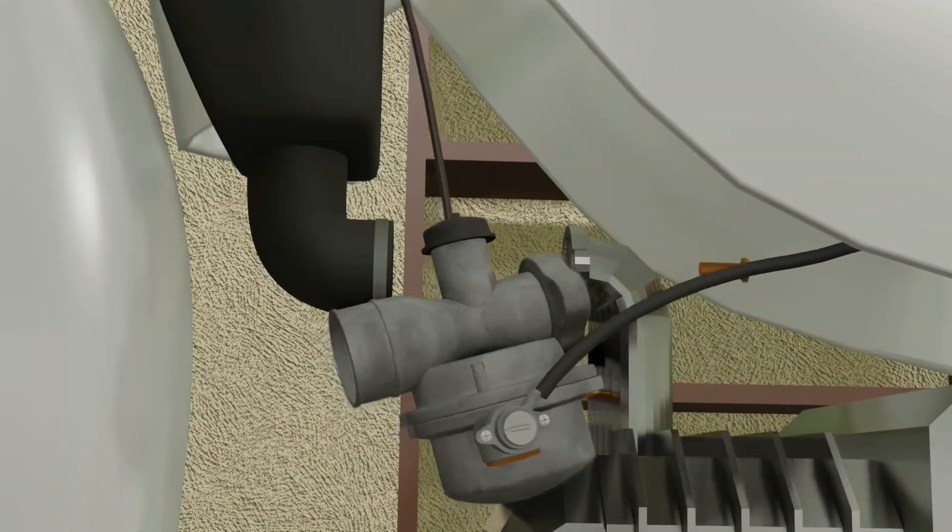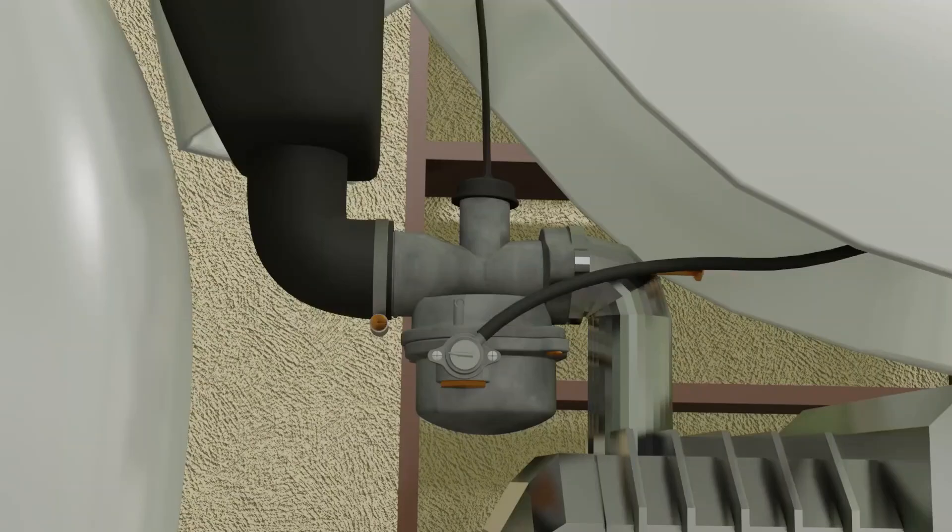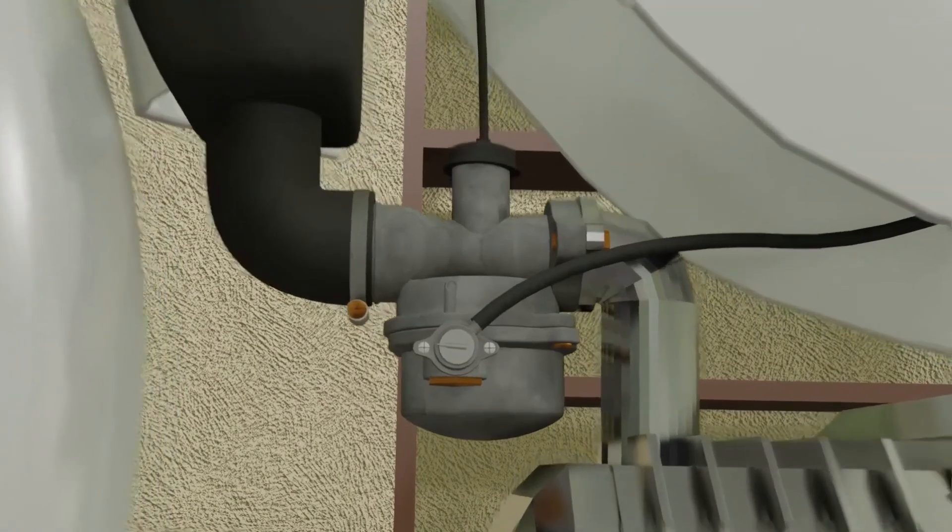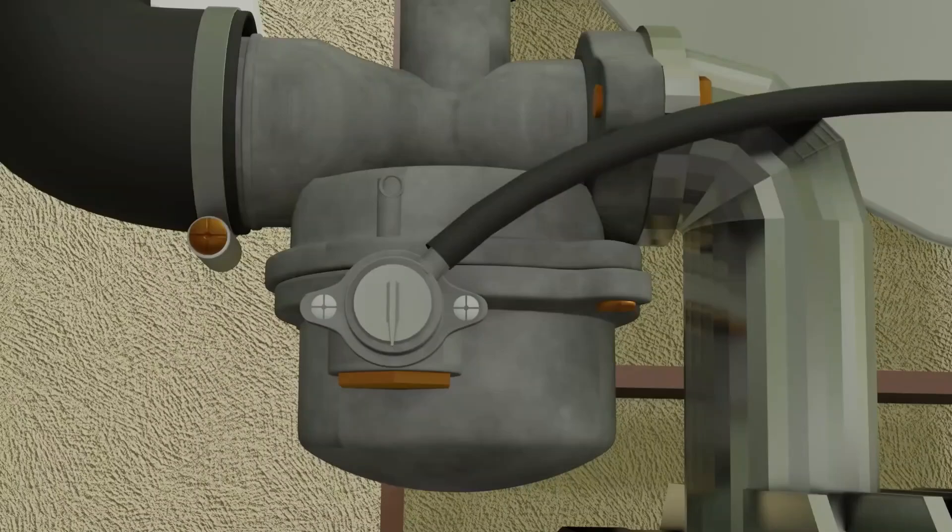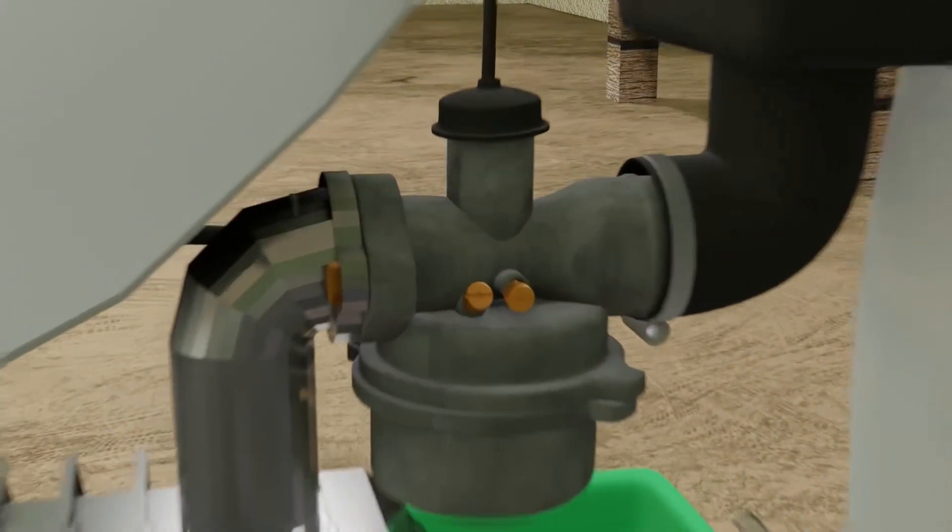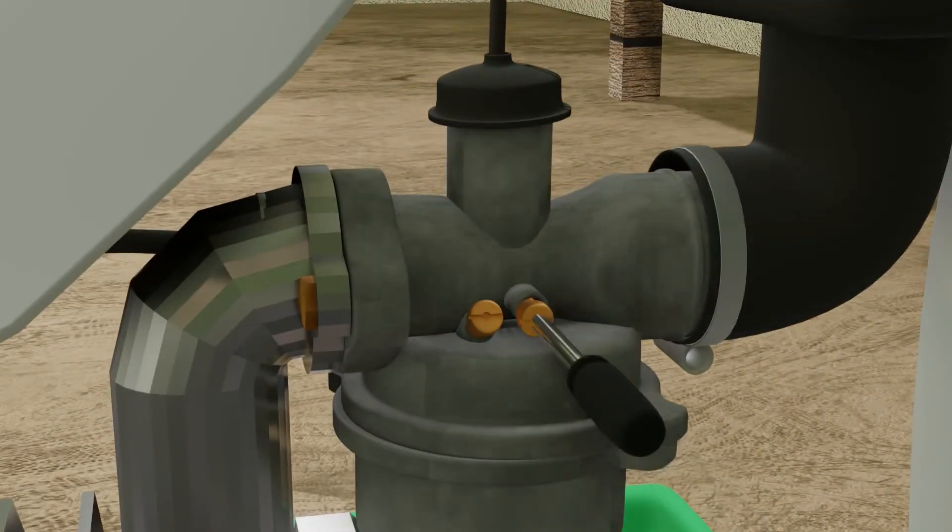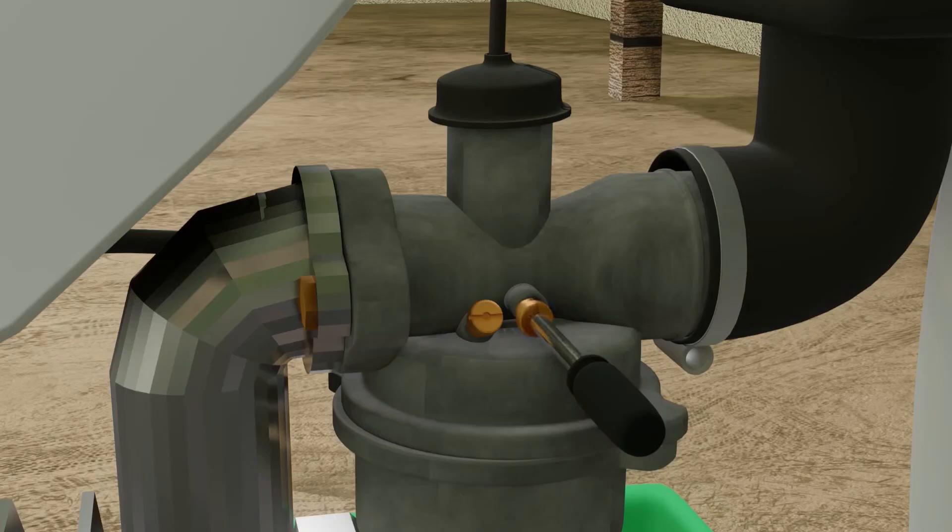Then install the carburetor to the manifold. After all is done, open the gas tab. The last step, the engine RPM setting. The way to do it is to turn on the engine and then tighten the screw in front until approximately 2 turns.